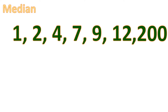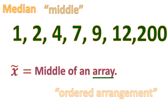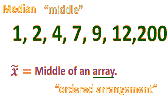So we have an alternative — we're going to use median. Median is actually the middle of the set of data, and it is denoted by x-tilde. Median is the middle of an array. An array is an ordered arrangement. So in other words, median is the middle of an ordered arrangement — either arranged from smallest to biggest or from biggest to smallest. In either way, it's still the same value in the middle.